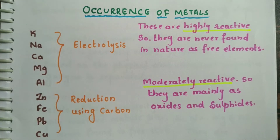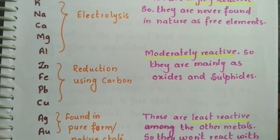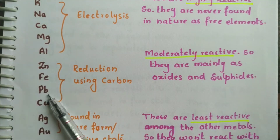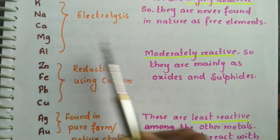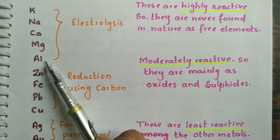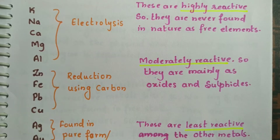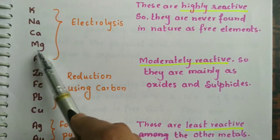I have written a list of metals based on their reactivity. The first set of metals are highly reactive. The second set is moderately reactive metals, and the third one is very less reactive — they can be considered as least reactive among all the metals.